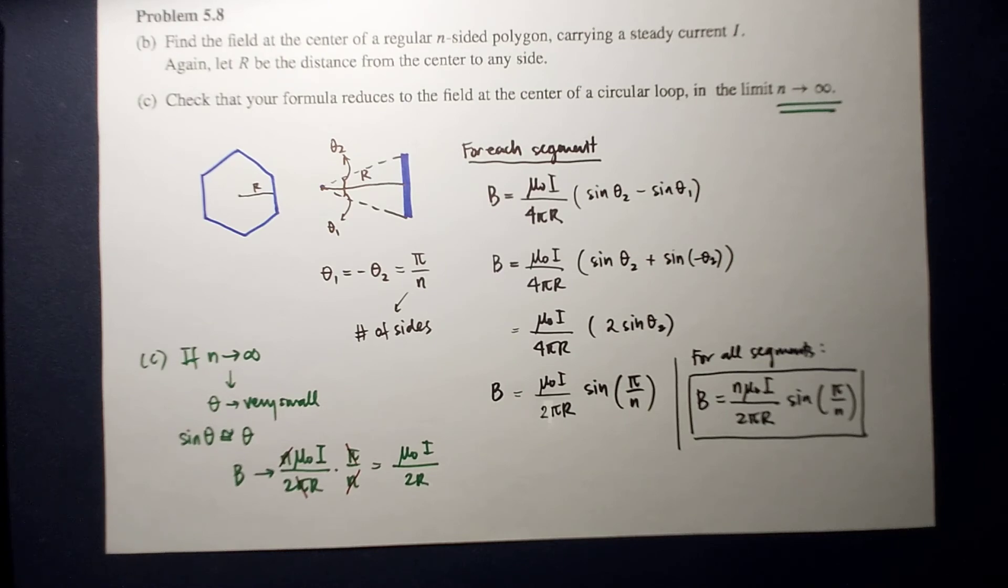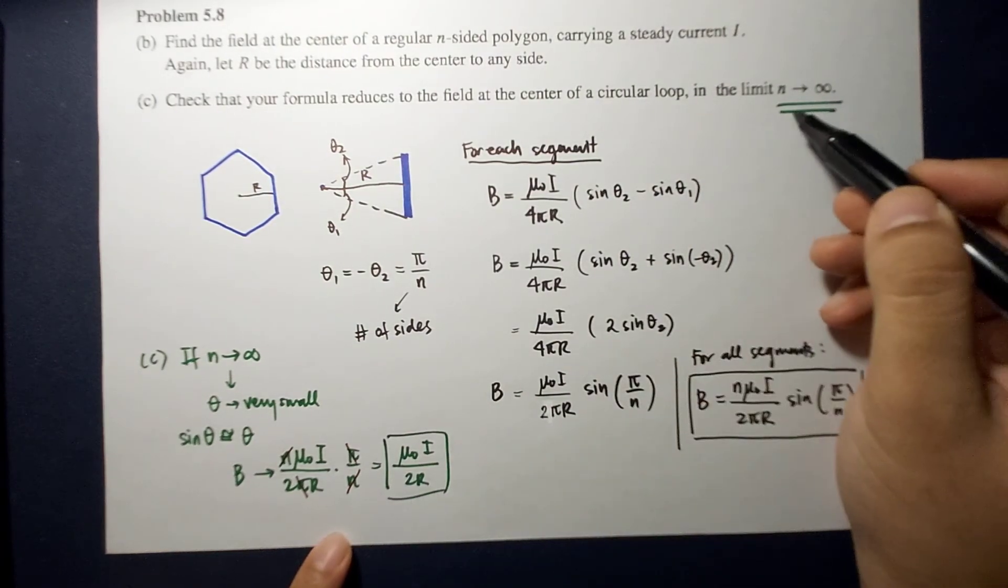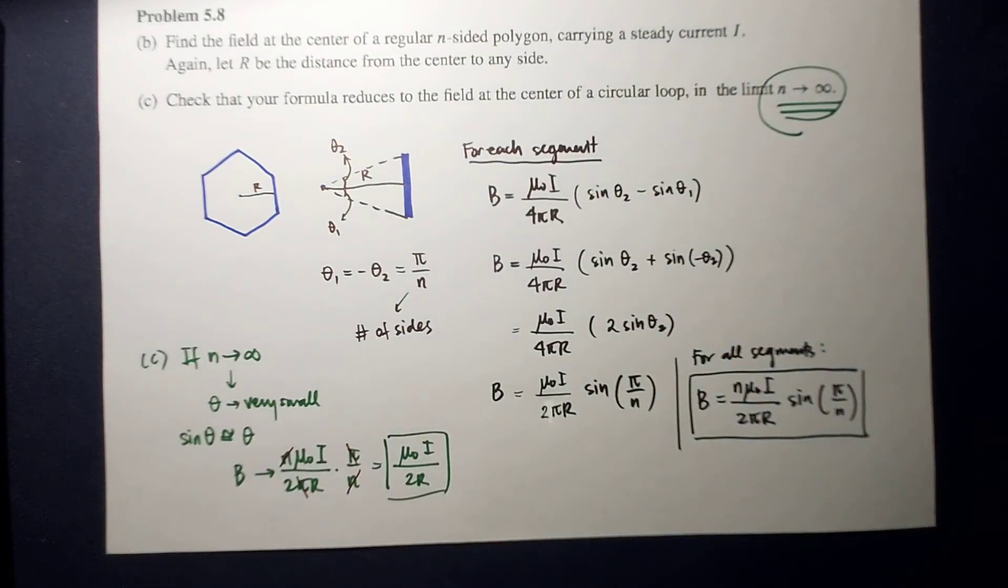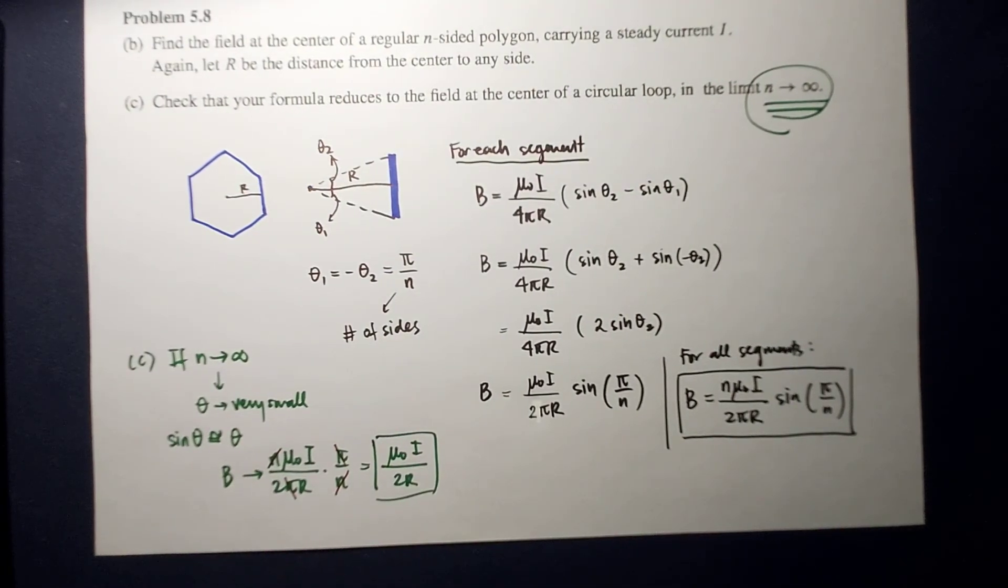So that's the magnetic field at the center of a circular loop, so this verifies this limit. Easy, right? Very easy. So that's all for now, it's your task to answer letter a, and then I'll see you guys in the next video. Thank you for watching, bye bye!